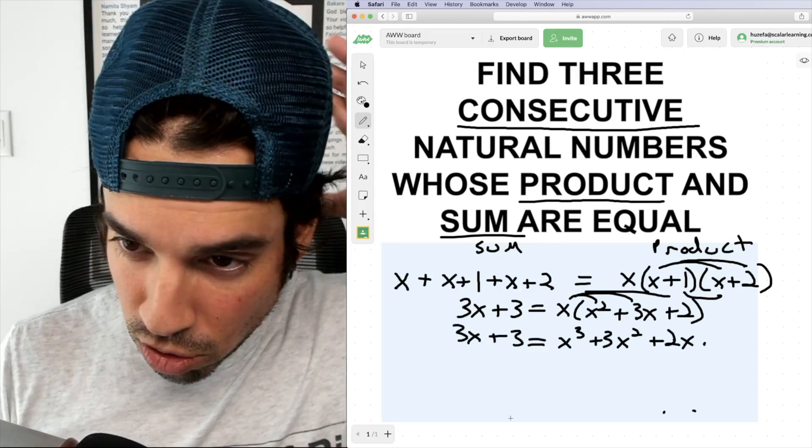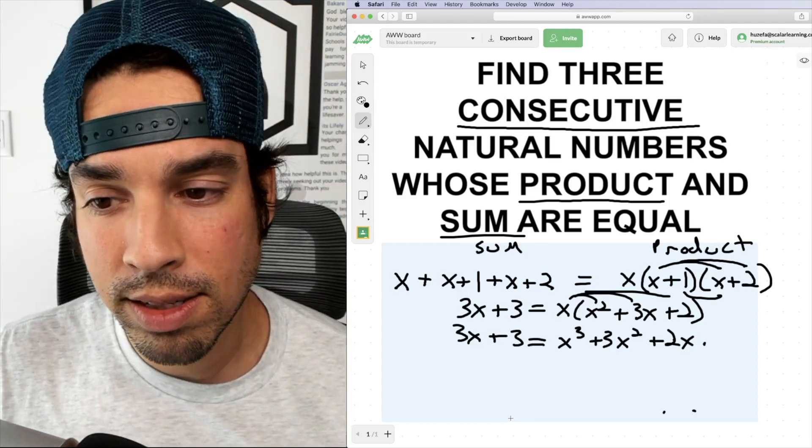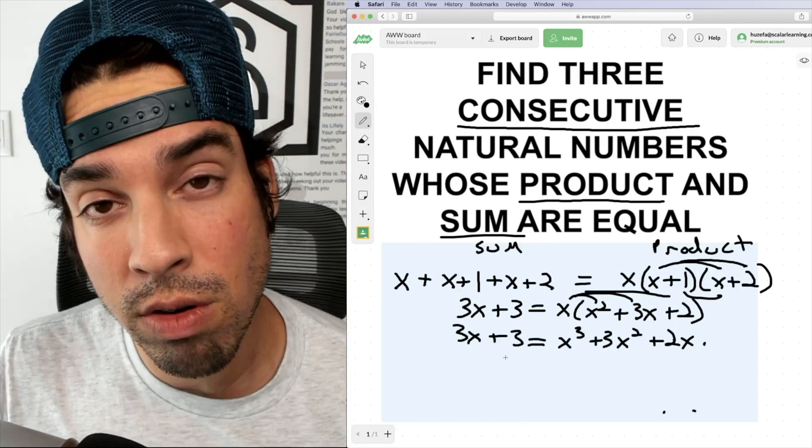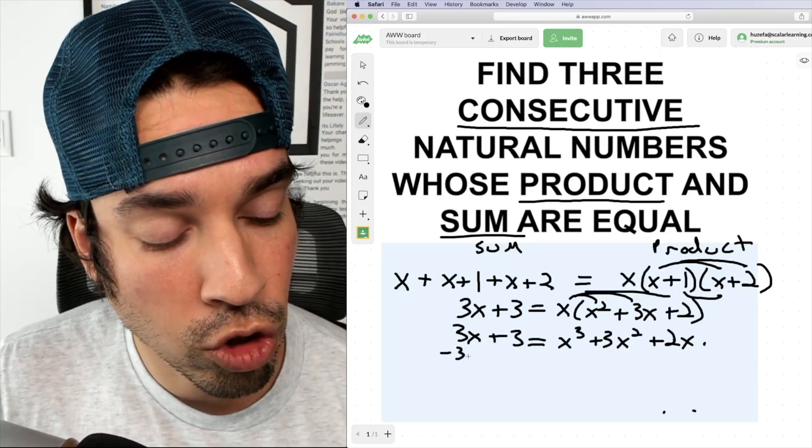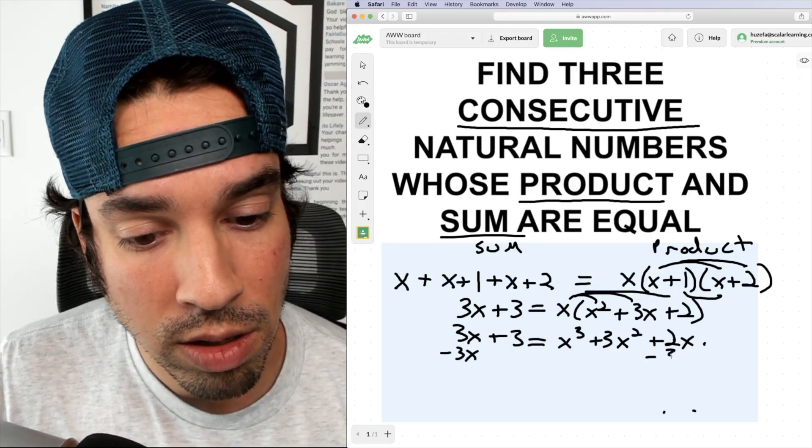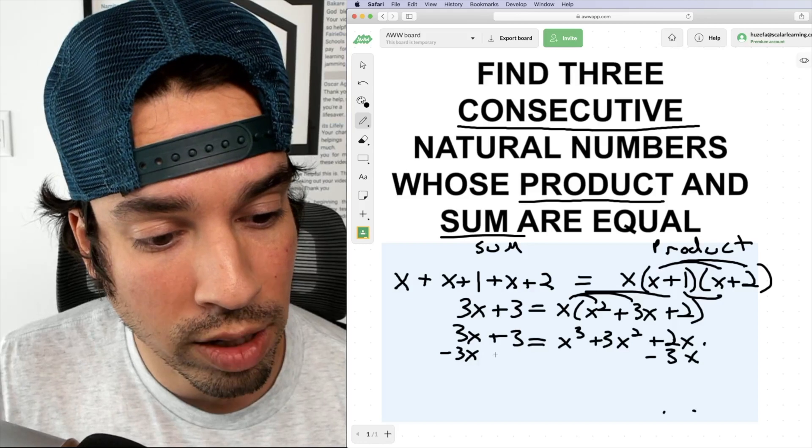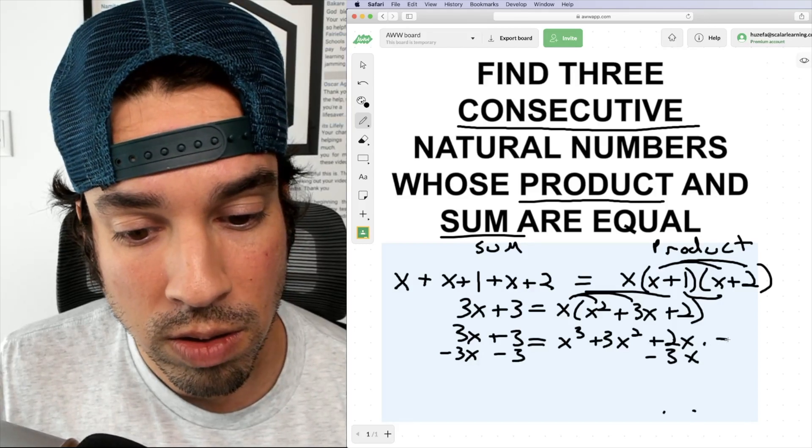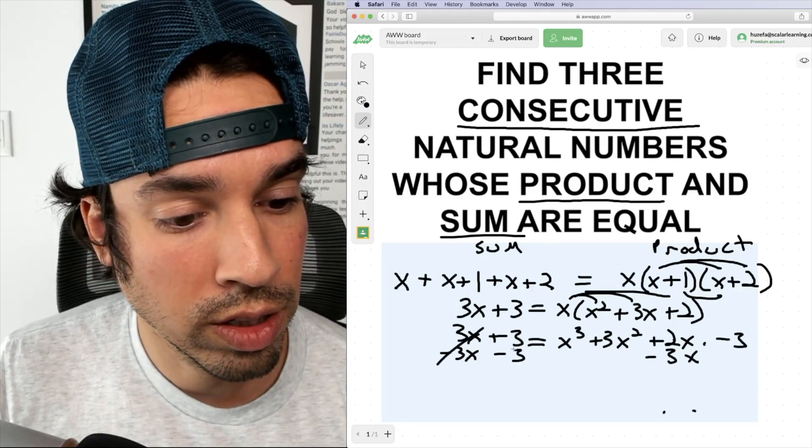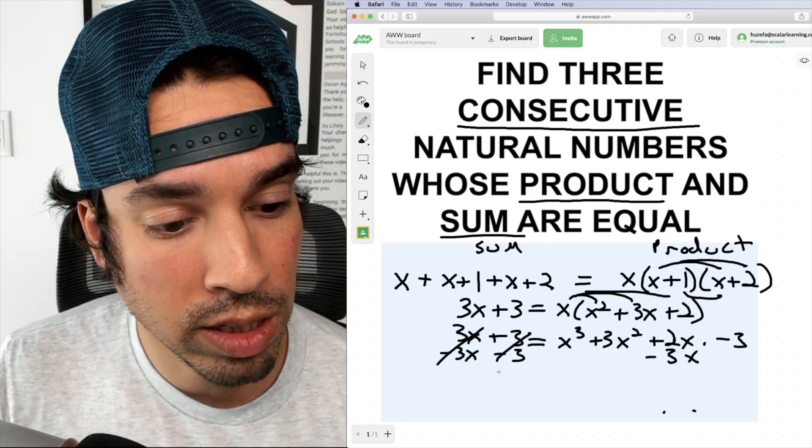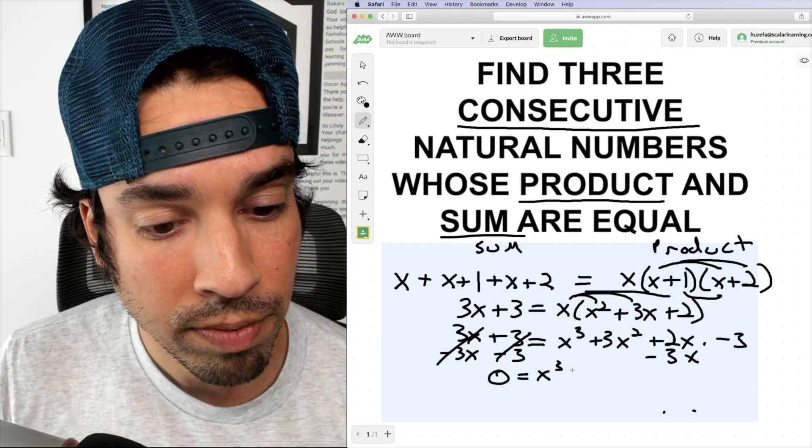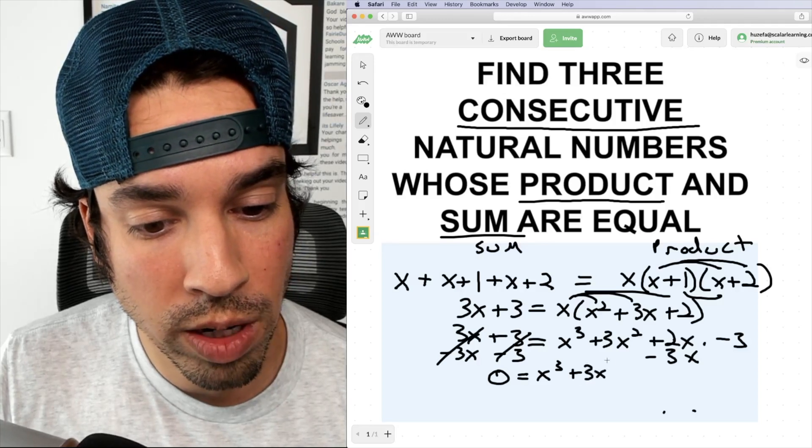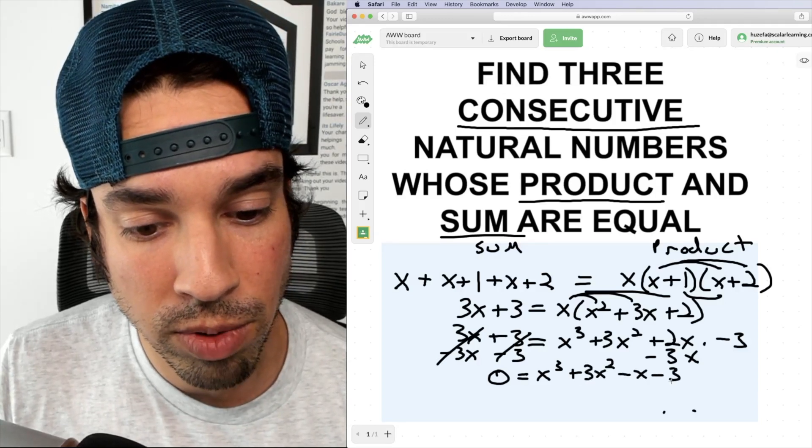Now I've got this big polynomial. The main thing that you wanna recognize in this case is we wanna set everything equal to zero and then we can try and hopefully factor and solve like that. So first I'm gonna subtract three x from both sides. And I'm also gonna subtract three from both sides. So those are gonna cancel. And now we've got something really good. We got zero equals x cubed plus three x squared minus x minus three.